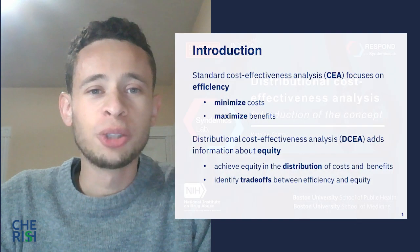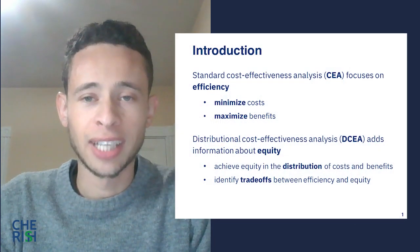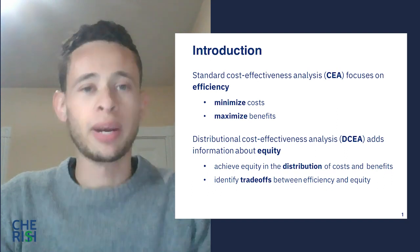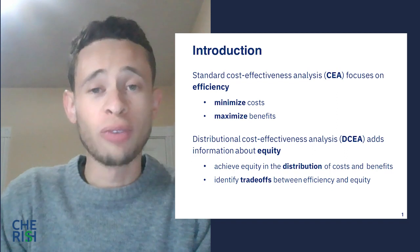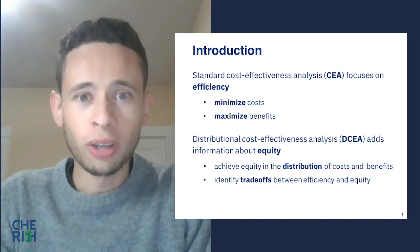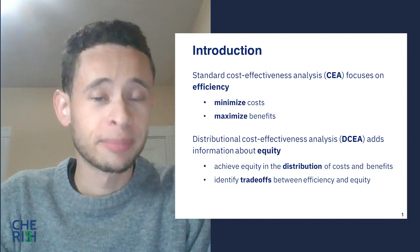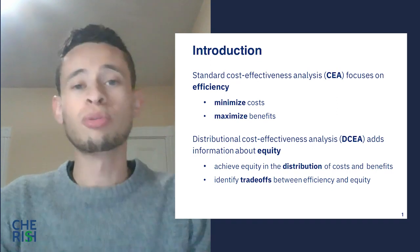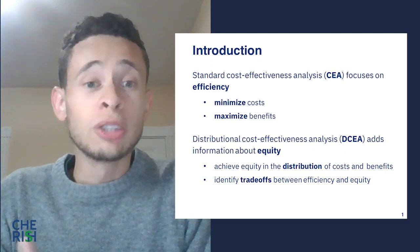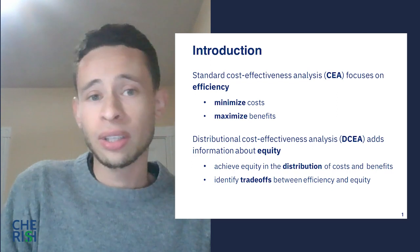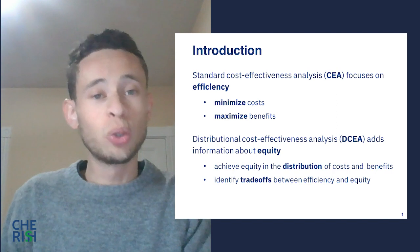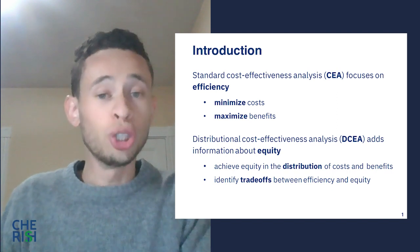Conventional cost-effectiveness analysis, or CEA, evaluates efficiency by comparing the aggregate costs and benefits of alternative strategies to improve total population health. The goal here is to assess the overall value for money, but this approach does not provide full information to support decision making about how costs and benefits might vary for different populations — in other words, about who gains and who loses from a given new intervention.